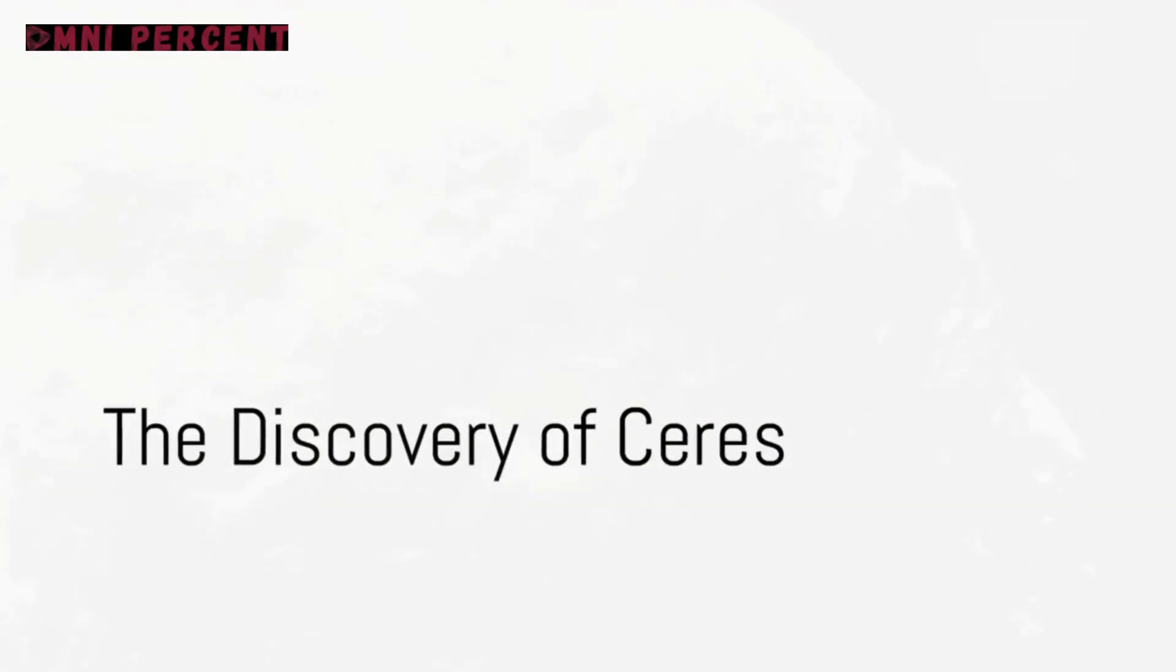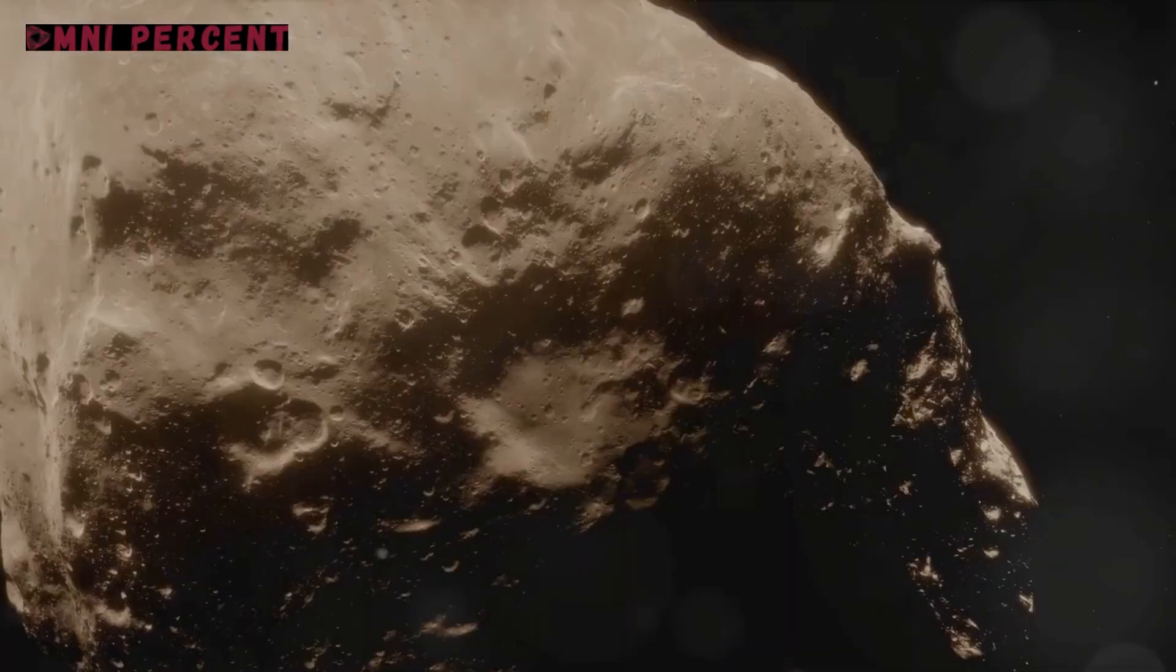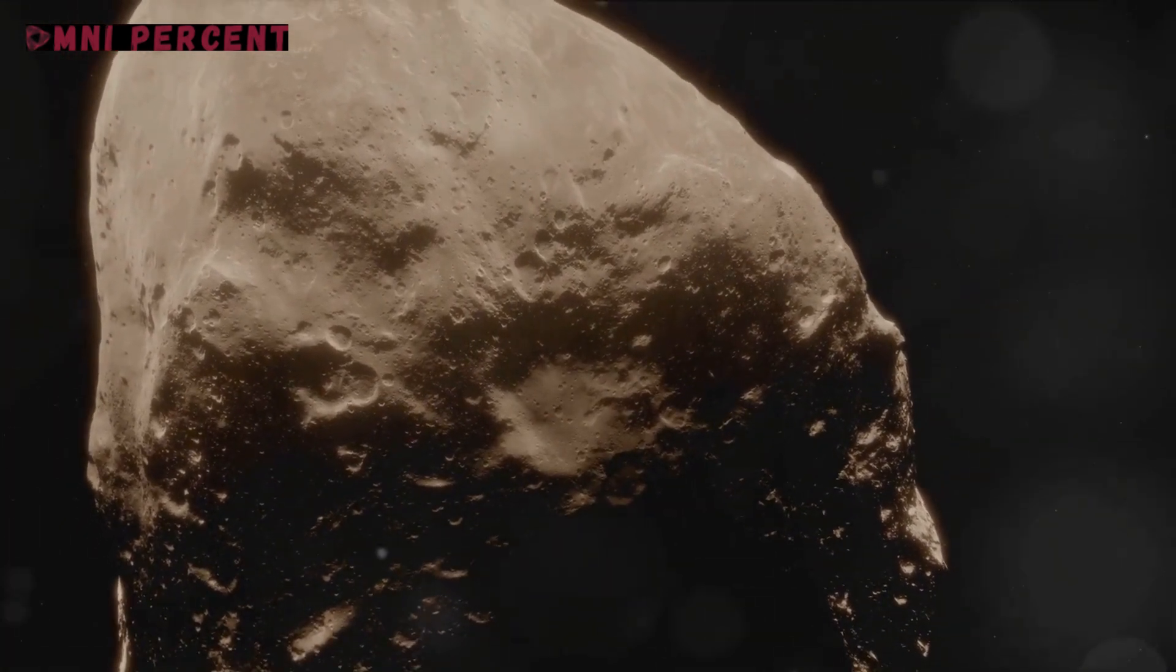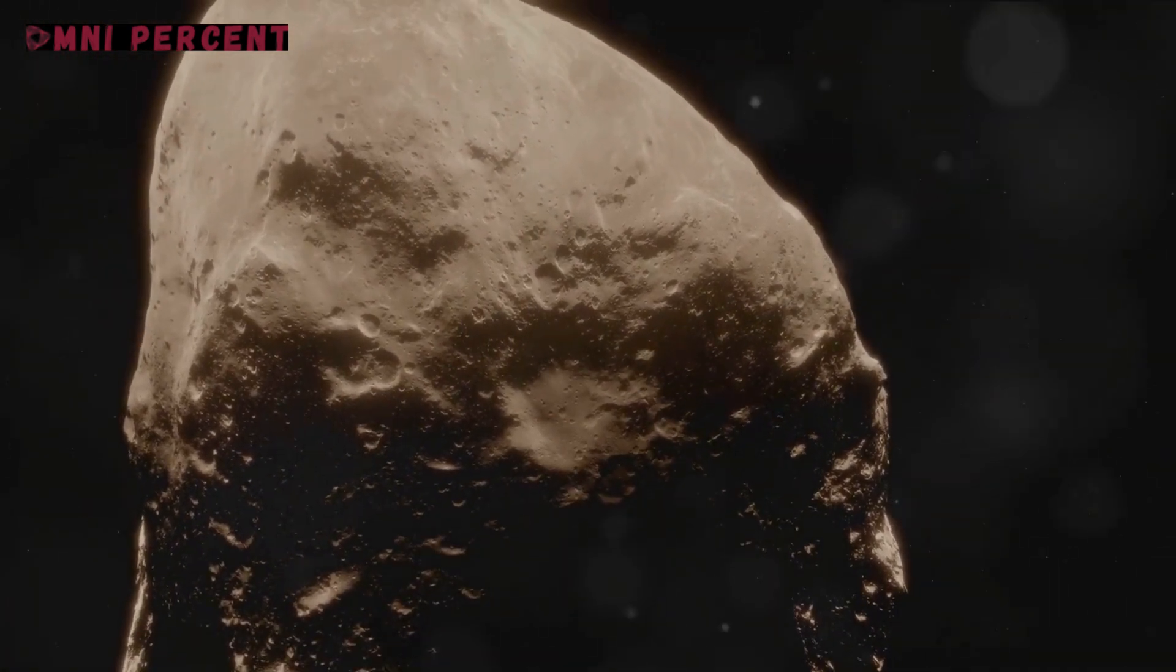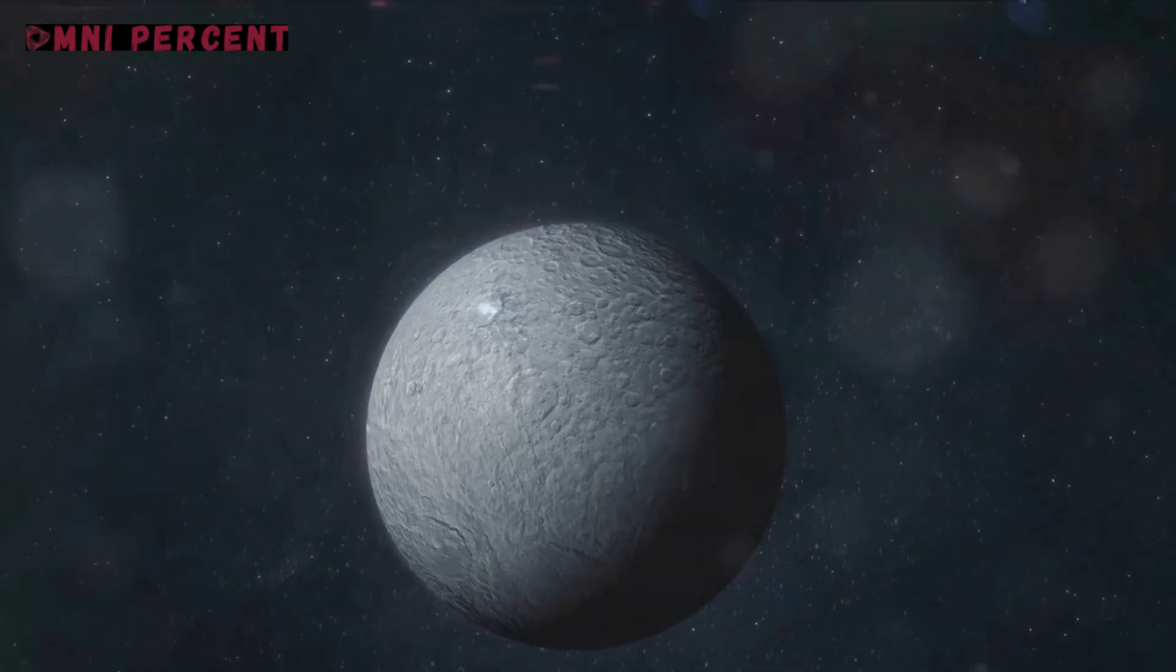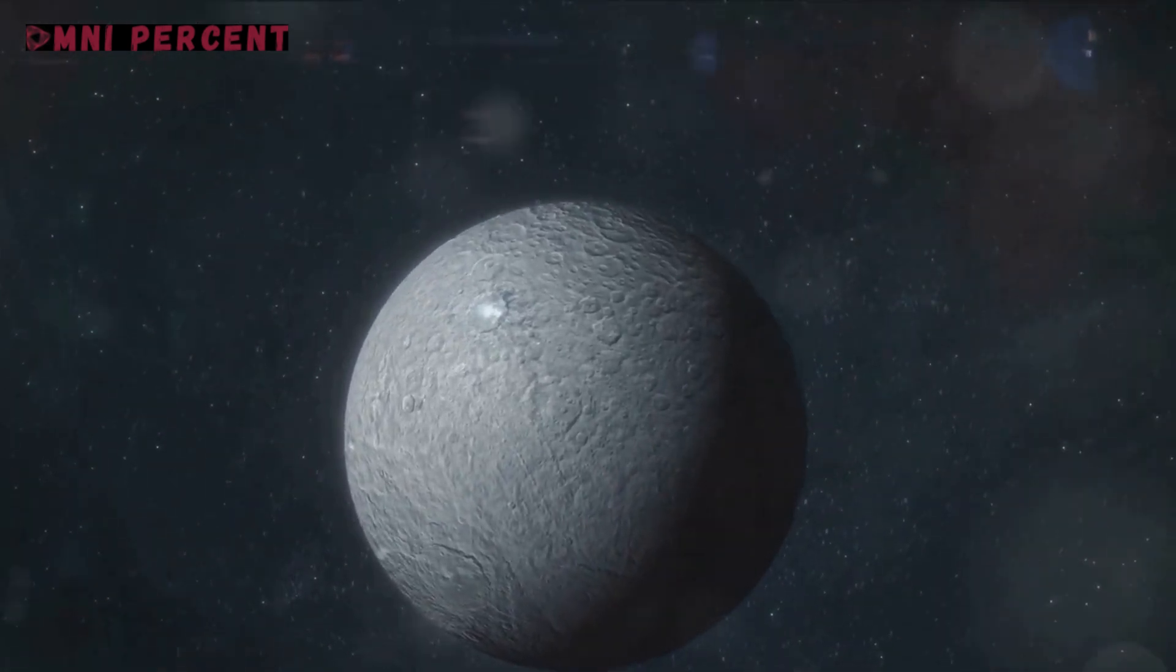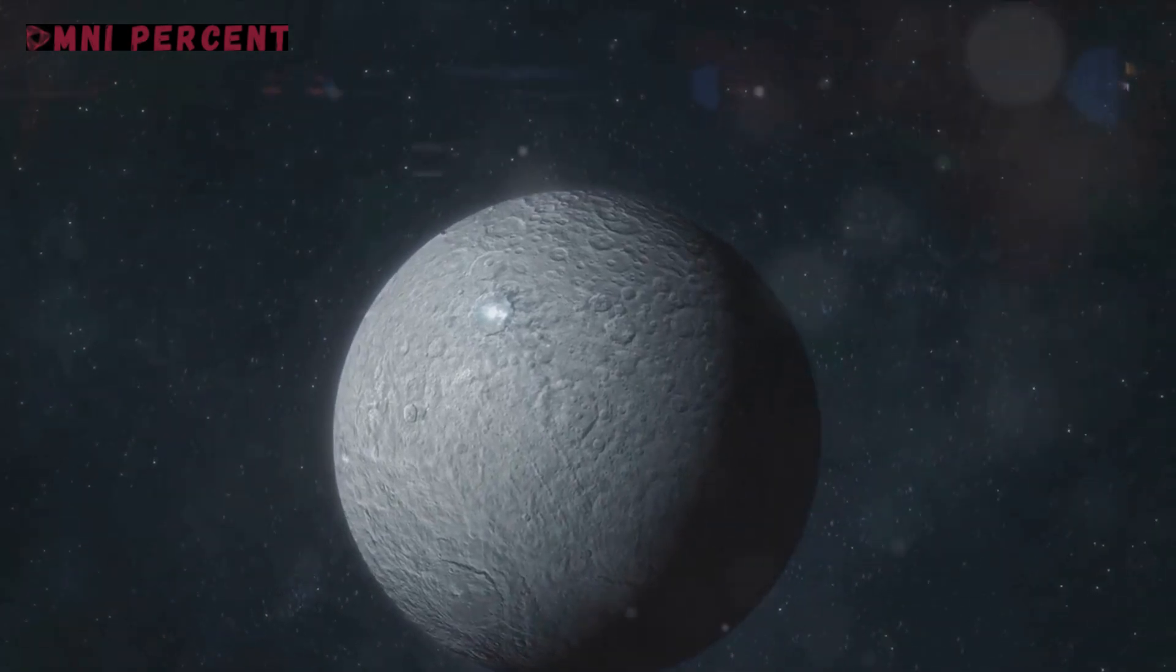Ceres, the colossal asteroid nestled between Mars and Jupiter, reigns supreme as the largest of its kind. Uniquely, it's also the only dwarf planet found in the inner solar system. Its sheer size, coupled with distinctive features, earmarks Ceres as a celestial body of paramount significance.